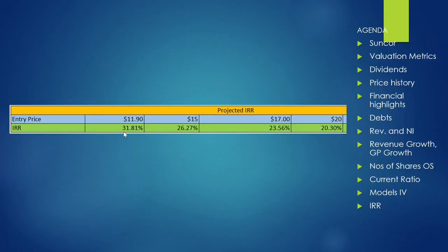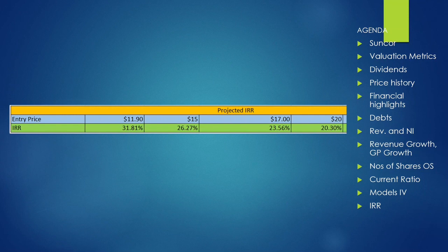Let me show the scenario analysis for different entry prices: if you enter at $15 you get approximately 27% return; if you enter at $17, the return is slightly lower; if you enter at $20 you still get around 20–30% return. These are the different returns based on different entry price points — what do you think? Is this a good return?